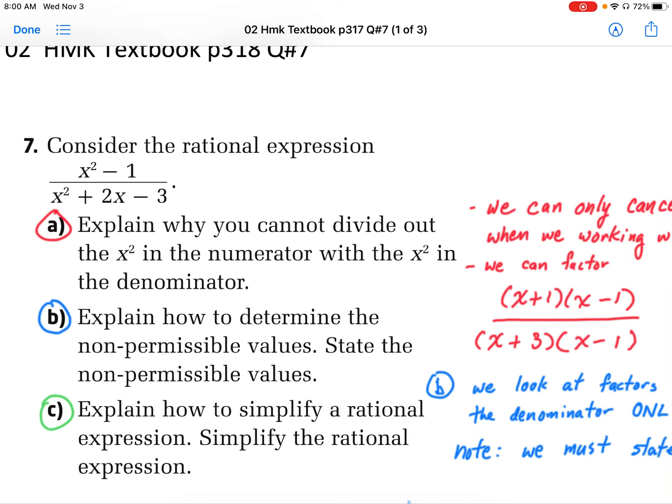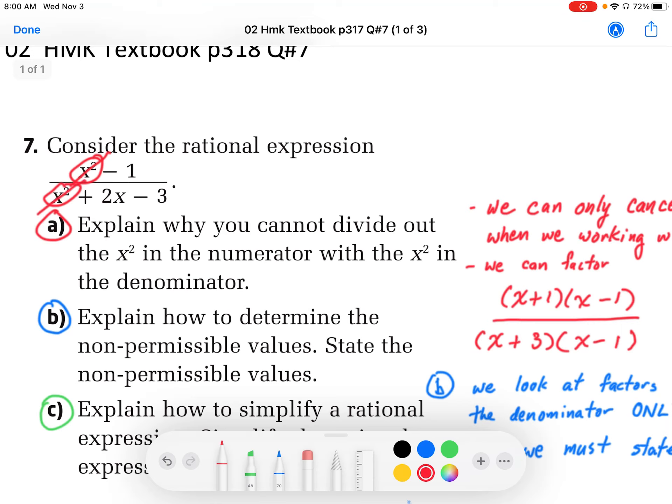In question number 7a, it says explain why you cannot divide out the x squared in the numerator with x squared in the denominator. So basically they're asking why we cannot do this cancellation, cancel this out and cancel this out.